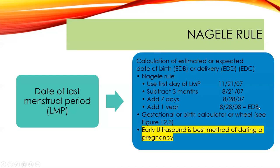In reality, we use things like a gestational wheel or a birth calculator. An early ultrasound is the best method of dating a pregnancy. Late ultrasound does not do what an early ultrasound does.